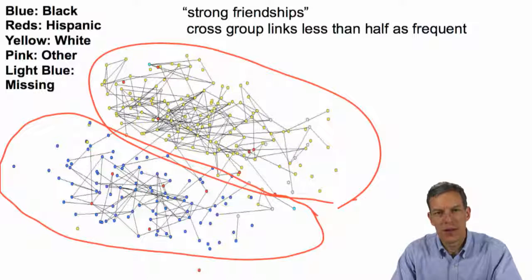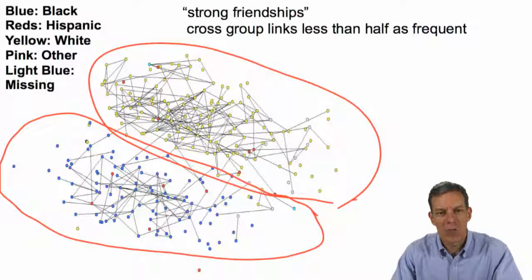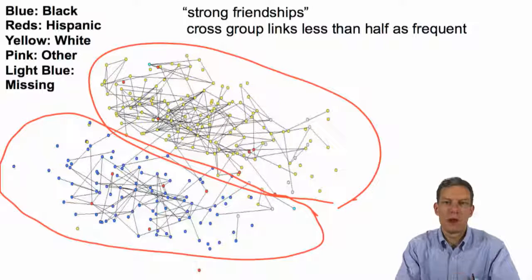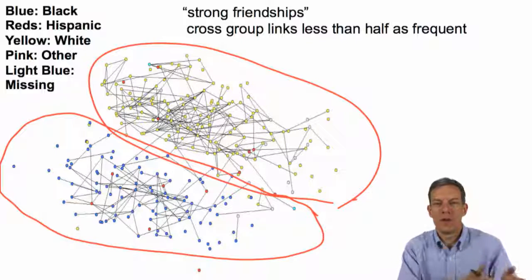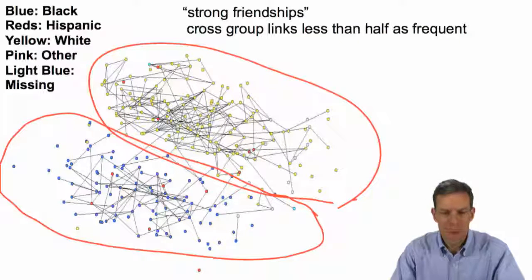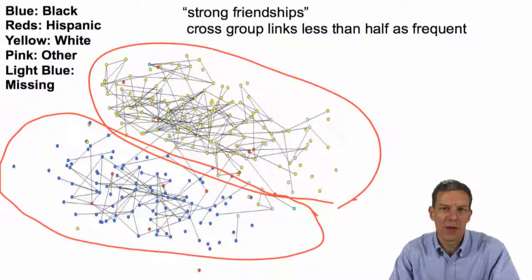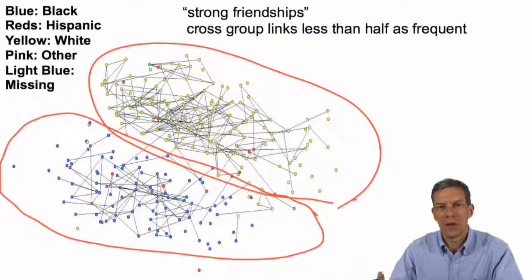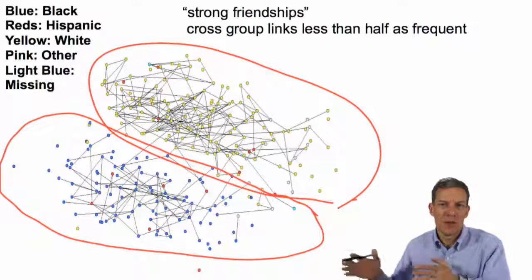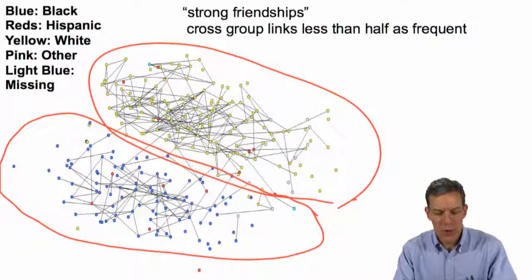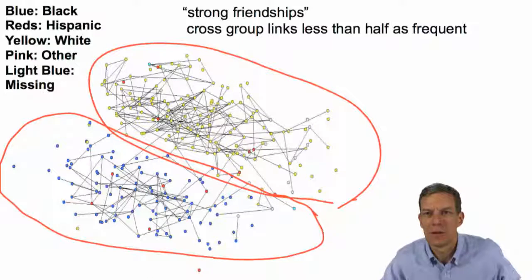So far we've looked at understanding equilibria and strategic complements — there's a lot of nice structure, and we can begin to understand things in relation to network structure and homophily, in terms of when multiple actions can be sustained. Next, we'll take a look at one quick application of this, and then start looking at games with richer action spaces — mostly what we've been looking at are 0-1 games, and we'll look at some other games with richer actions.